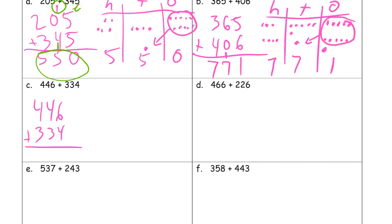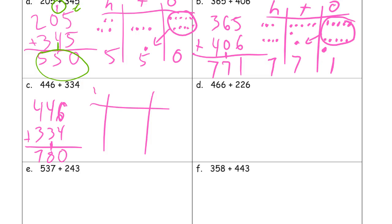Now for addition, don't cross out any numbers. Start with the ones digits first. Six plus four — that's 10, got to compose a 10. Add the tens digits: four plus three is seven, one more is eight. And four plus three is seven. Hundreds, tens, ones — there we go.